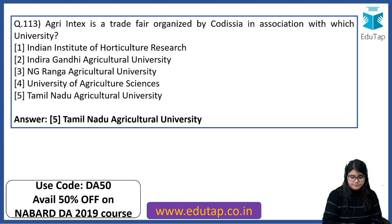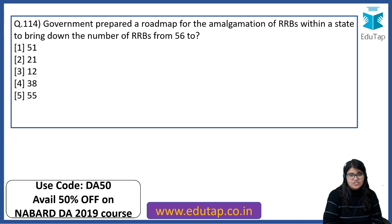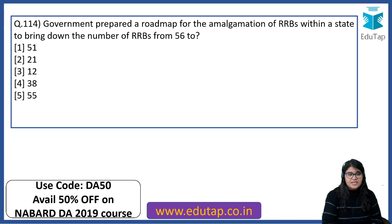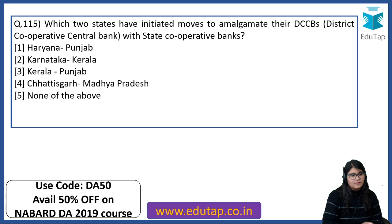The government prepared a roadmap for amalgamation of regional rural banks within a state to bring down the number of RRBs from 56 to 38. In your syllabus there is also special reference to rural banking. Which two states have initiated moves to amalgamate their district cooperative central bank with the state cooperative banks? The answer is Kerala and Punjab.